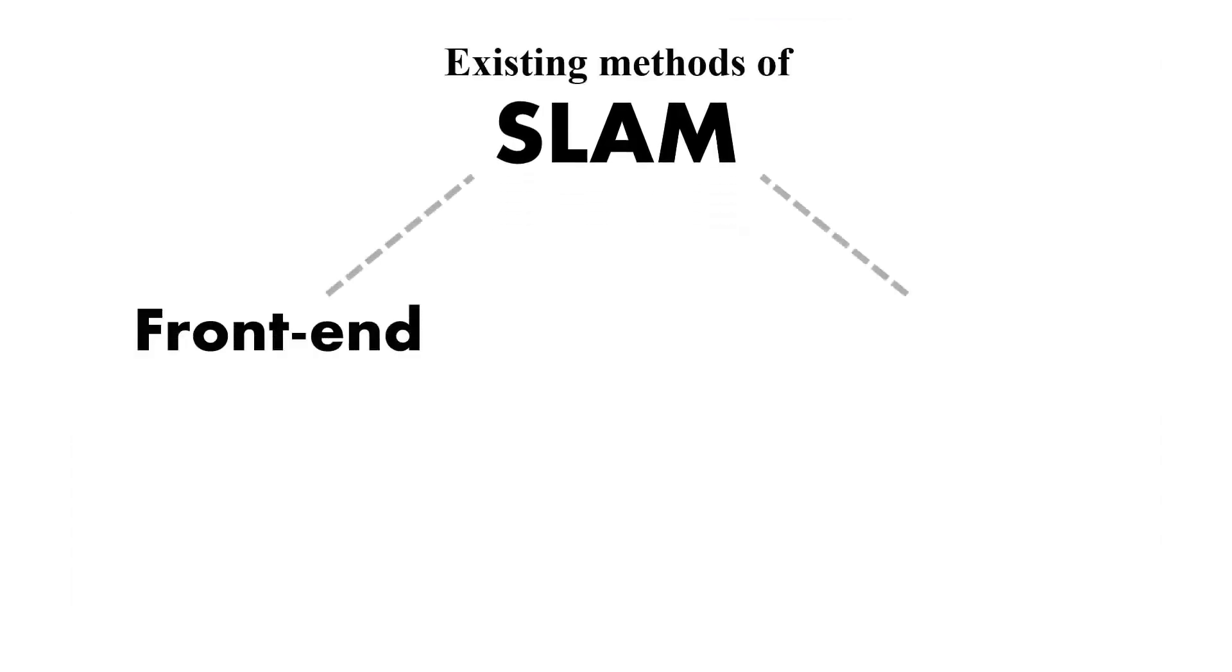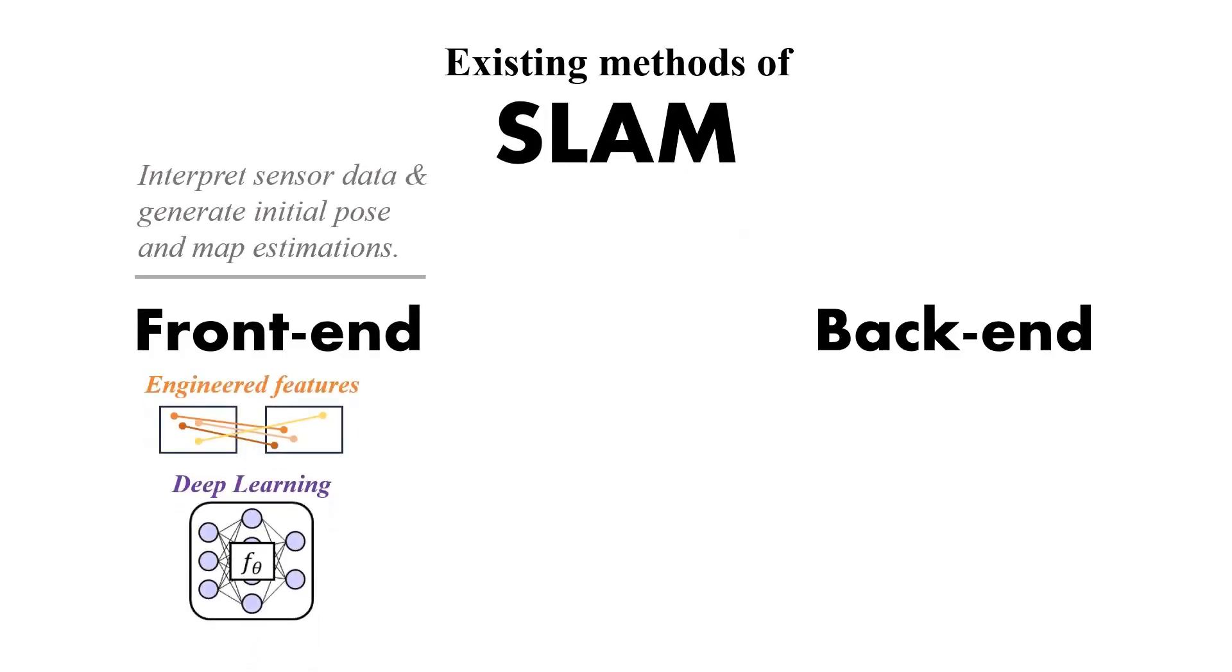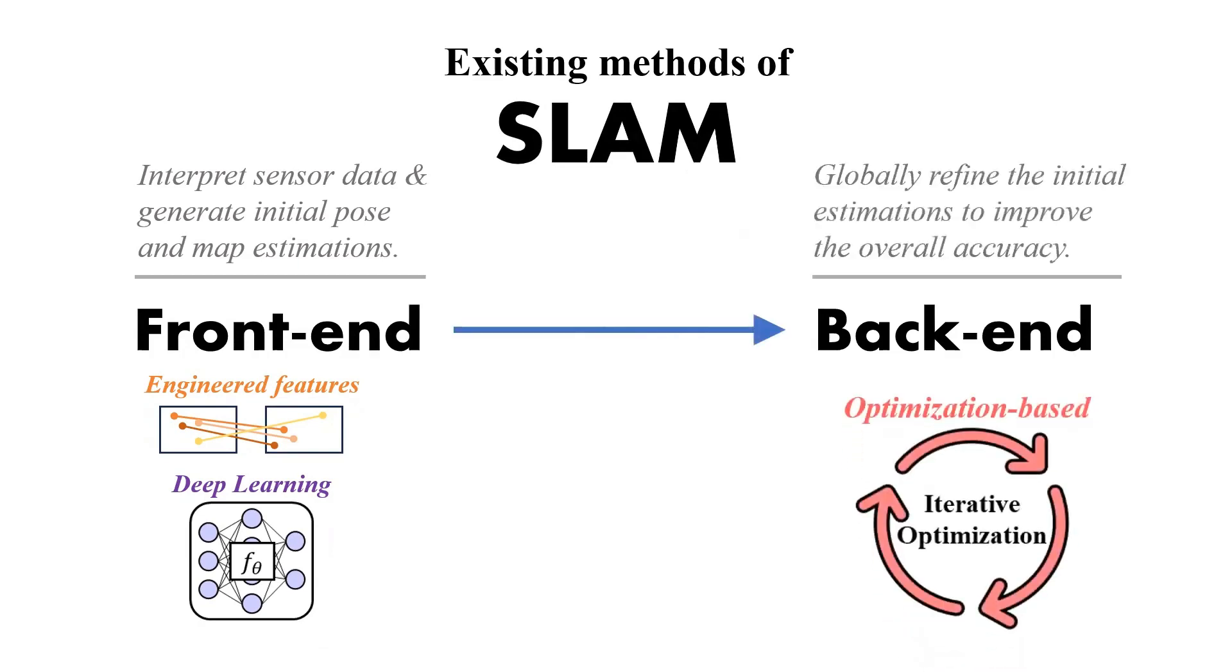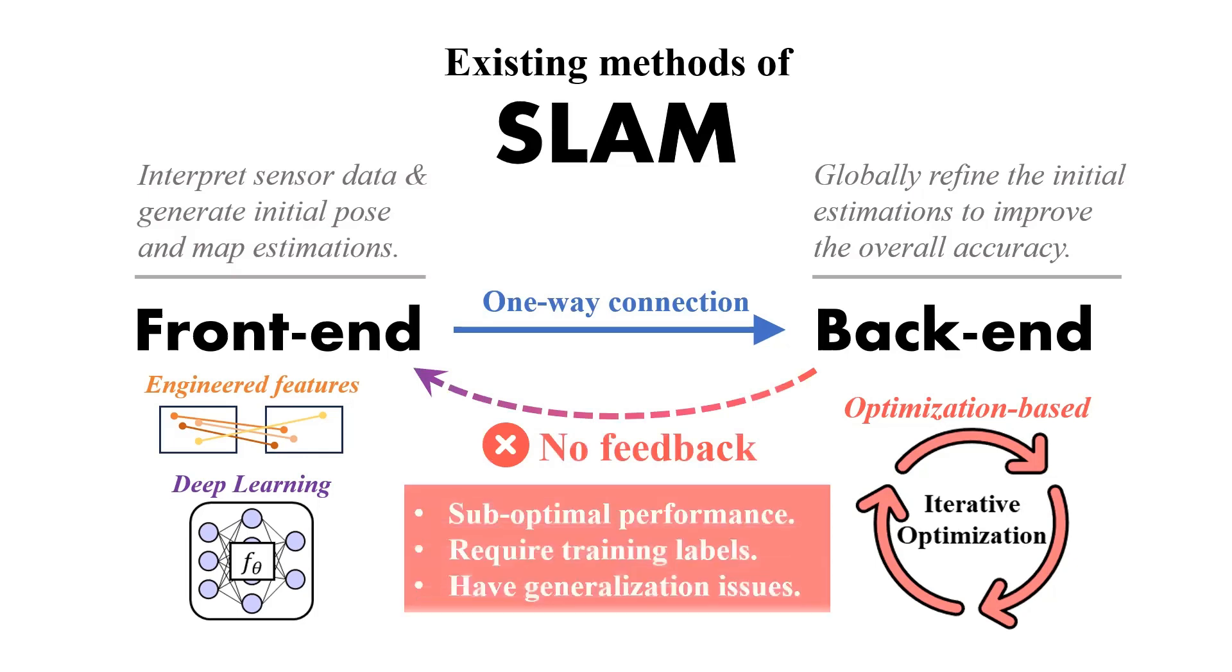The design of existing SLAM methods generally adheres to a front-end and back-end architecture. In this structure, the front-end is typically responsible for interpreting sensor data and generating initial pose and map estimations using engineered feature tracking or deep learning methods, while the back-end refines these initial estimations to improve the overall accuracy through global optimization. Although this front-back-end design has achieved great success, its limitation is that there's only a one-way connection from the front-end to the back-end with no feedback in the other direction. Such a decoupled paradigm can lead to only sub-optimal performance of the system.